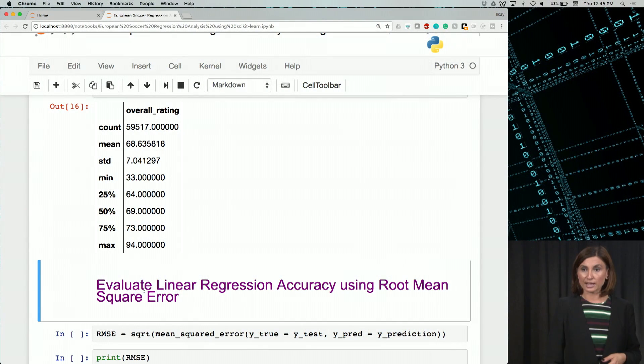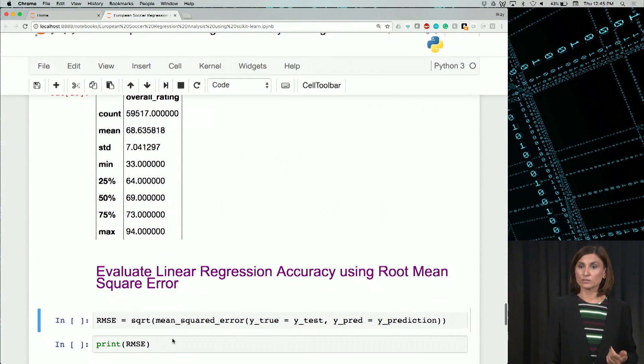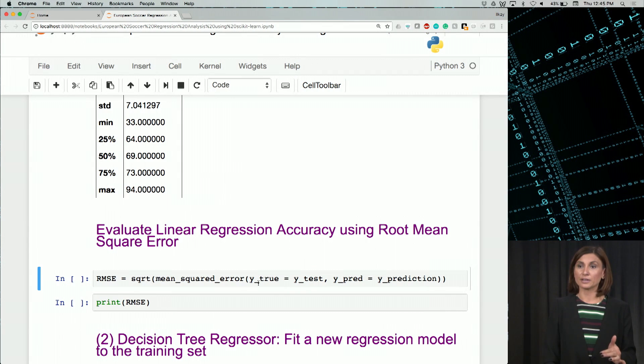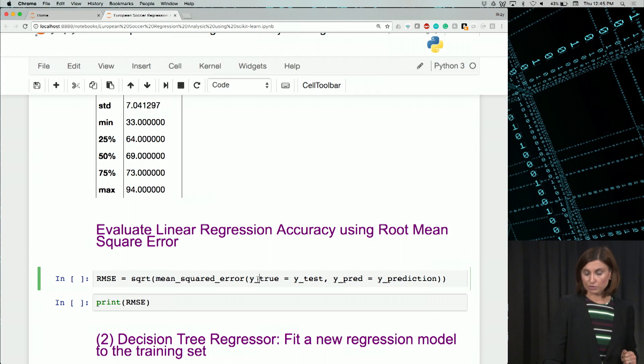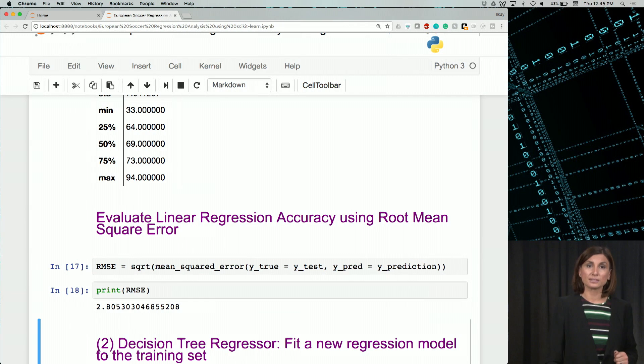So let's check that RMSE equals square root of mean error and y_true is y_test and y_pred is y_prediction here, which are the arguments that we give to mean squared error function.